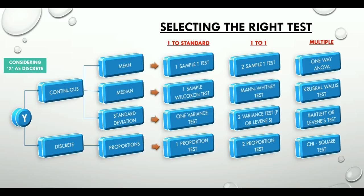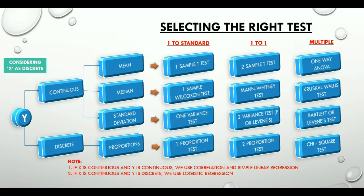To answer your question, if x is continuous and y is also continuous, we use correlation and simple linear regression. If x is continuous and y is discrete, we use logistic regression.